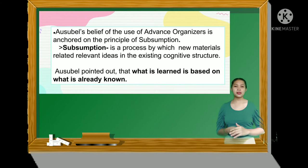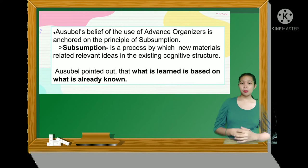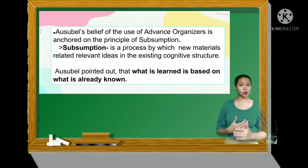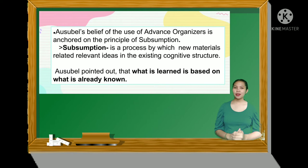Ausubel believed that the use of advanced organizers is anchored on the principle of subsumption, and that the primary way of learning was subsumption. Subsumption is a process by which new material is related to relevant ideas in the existing cognitive structure. Ausubel pointed out that what is learned is based on what is already known. This signifies that one's prior knowledge and biases limit and affect what is learned. Also, retention of new knowledge is greater because it is based on prior concrete concepts.